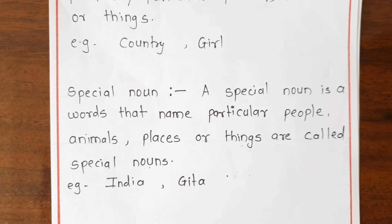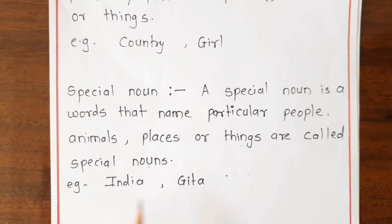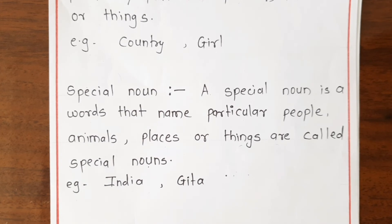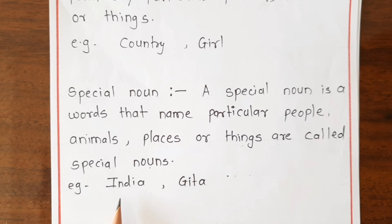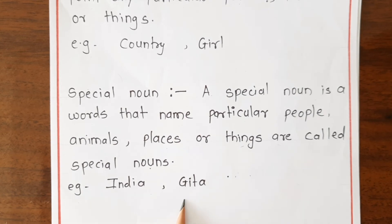For example, 'India' and 'Gita' are proper nouns. 'Country' is a common noun, but 'India' is a particular country, so it is a proper noun. Similarly, a girl's name like 'Gita' is a proper noun because it refers to a particular person.